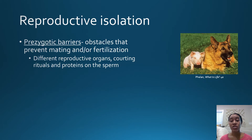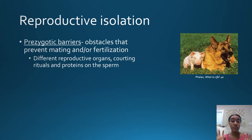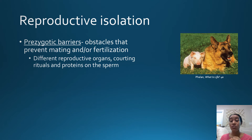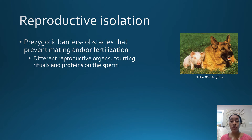Reproductive isolation between two species can occur via two types of barriers. The first are prezygotic barriers — obstacles that prevent two different species from mating in the first place and prevent fertilization. This might be due to different structural differences in reproductive organs or differences in courting ritual, meaning these two organisms might not even attempt to mate. You also have differences in proteins present on the sperm, which will prevent the sperm from entering the egg because it has the wrong protein coat.